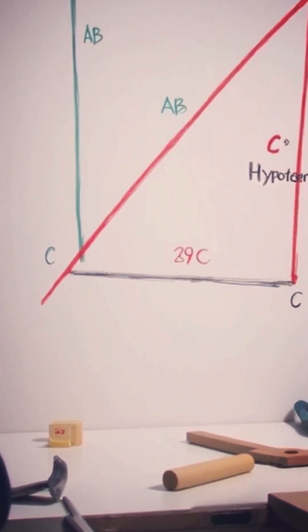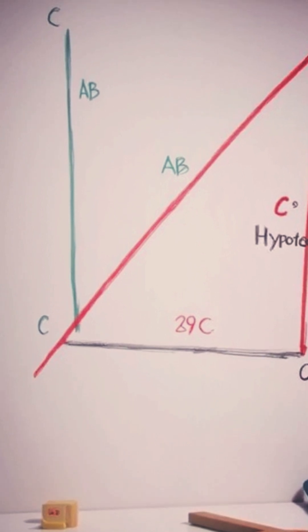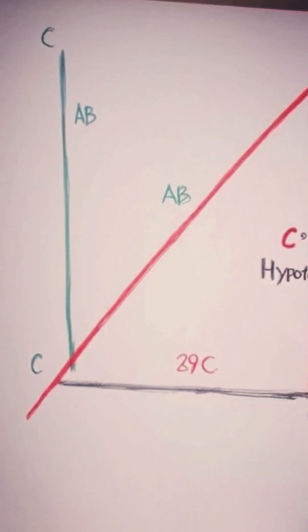Let's simplify the Pythagorean Theorem. Imagine a triangle with sides A, B, and C, where C is the hypotenuse and the angle between A and B is 90 degrees.